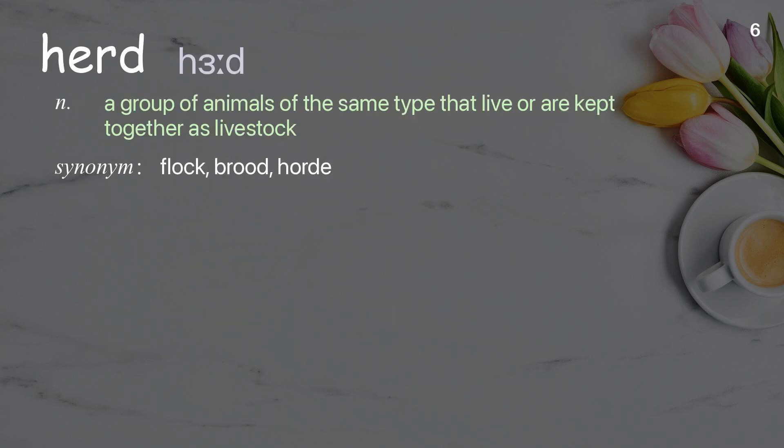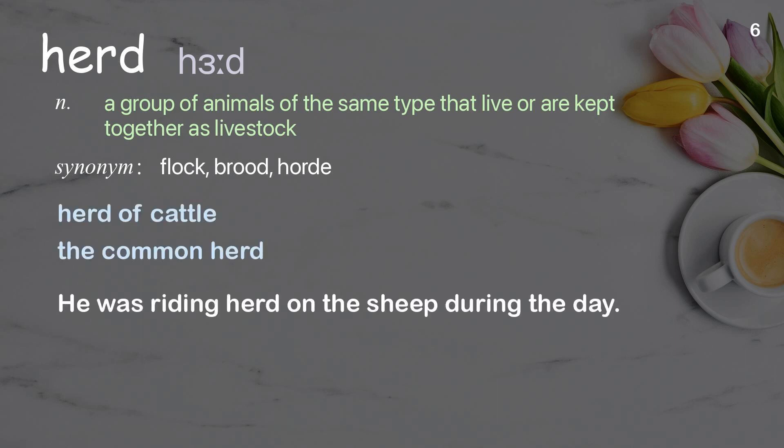Herd: A group of animals of the same type that live or are kept together as livestock. Examples: Herd of cattle. The common herd. He was riding herd on the sheep during the day.